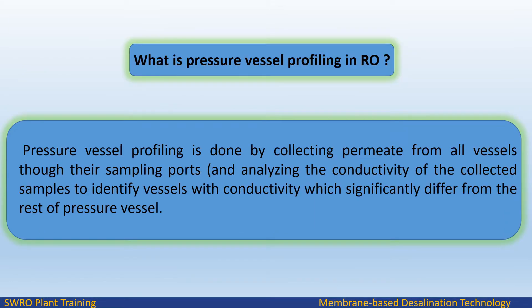What is pressure vessel profiling in RO? Pressure vessel profiling is done by collecting permeate from all vessels through their sampling ports and analyzing the conductivity of the collected samples to identify vessels with conductivity that significantly differs from the rest of the pressure vessels.